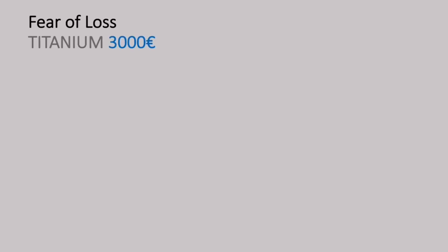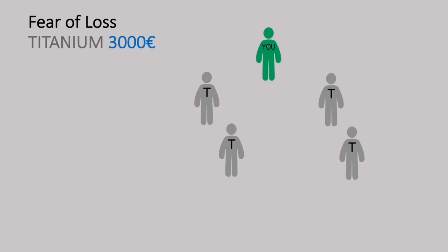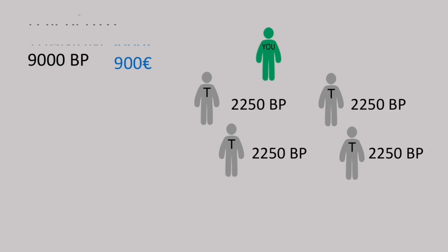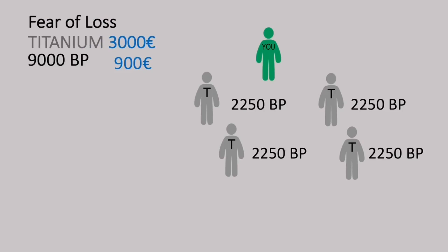Fear of Loss with the titanium package: this is you — you invite 2 titanium packages on your left and 2 titanium packages on your right. Each titanium package gets 2,250 binary points, giving a total of 9,000 binary points, or 900 euros. Adding the 3,000 euros Fear of Loss bonus, you get a total of 3,900 euros.